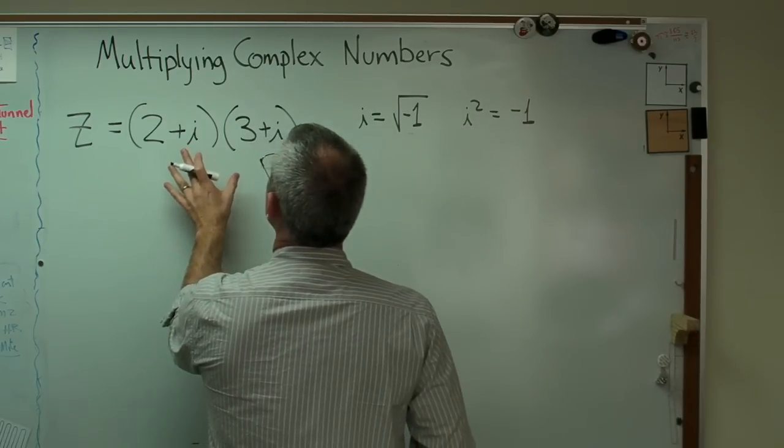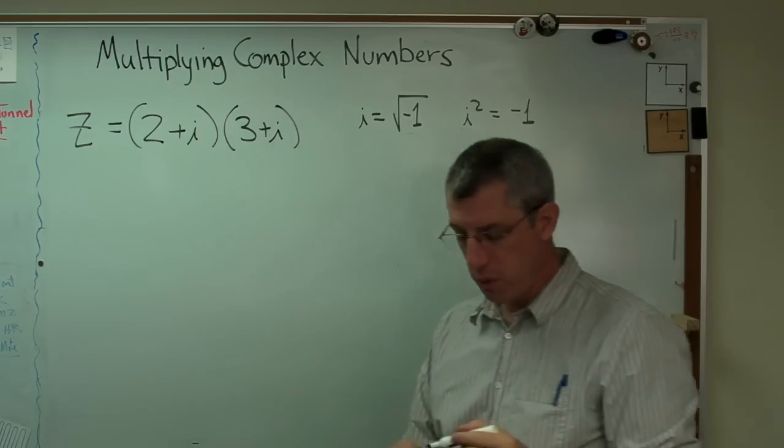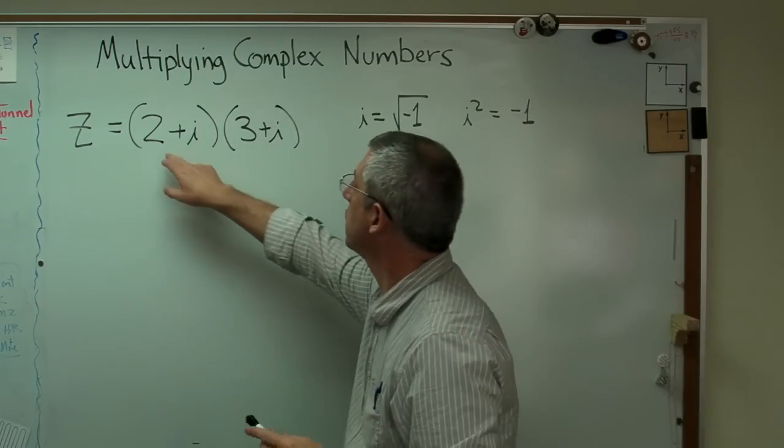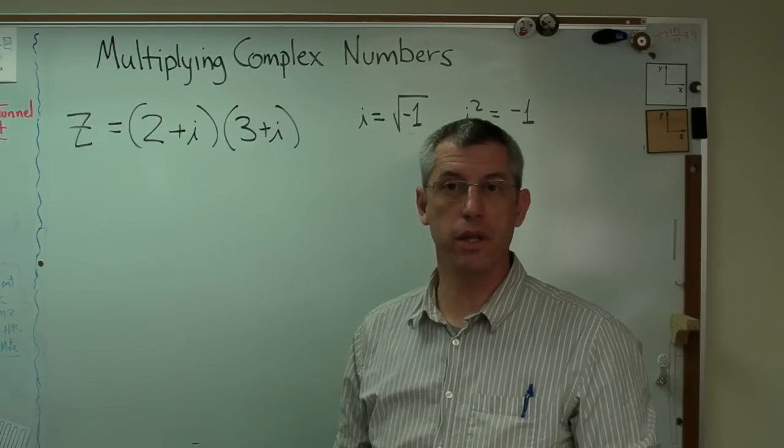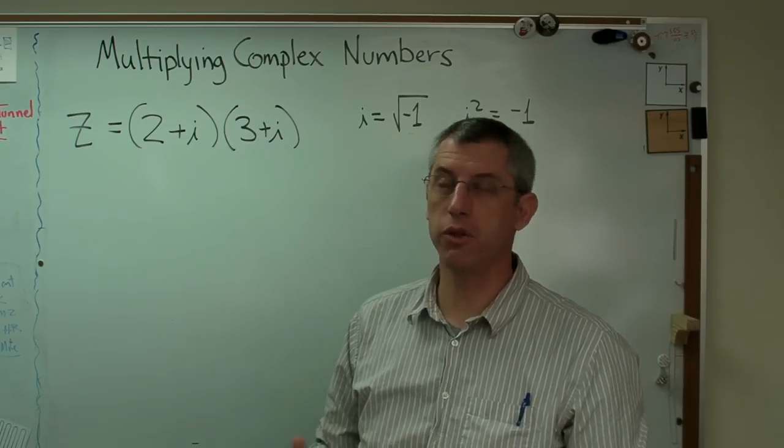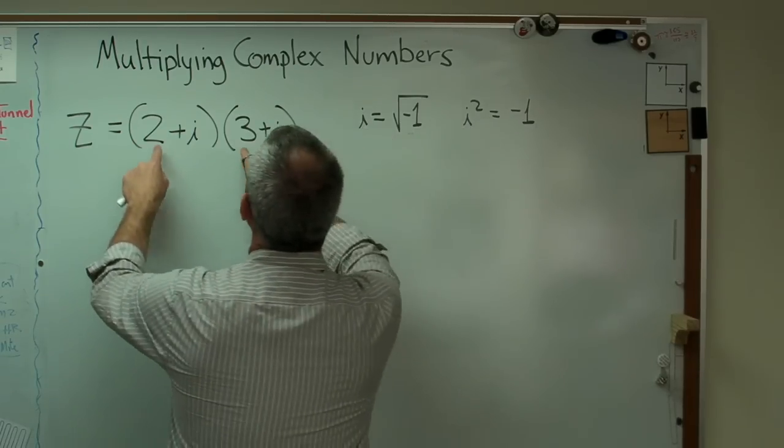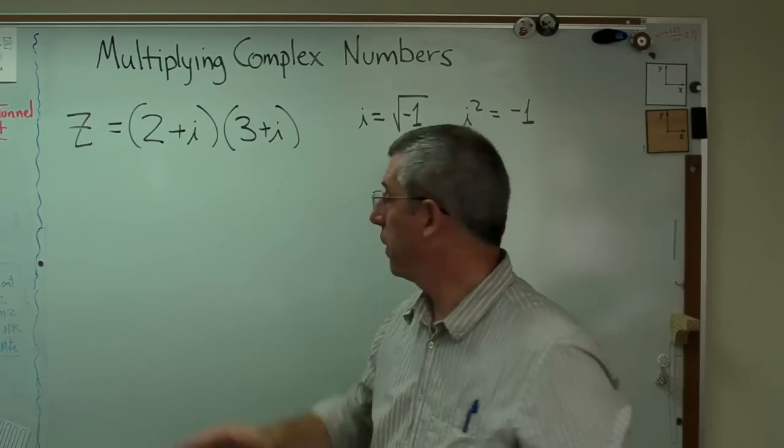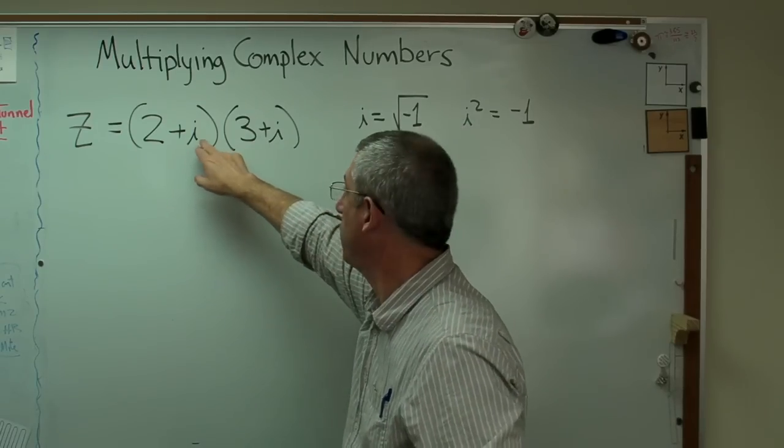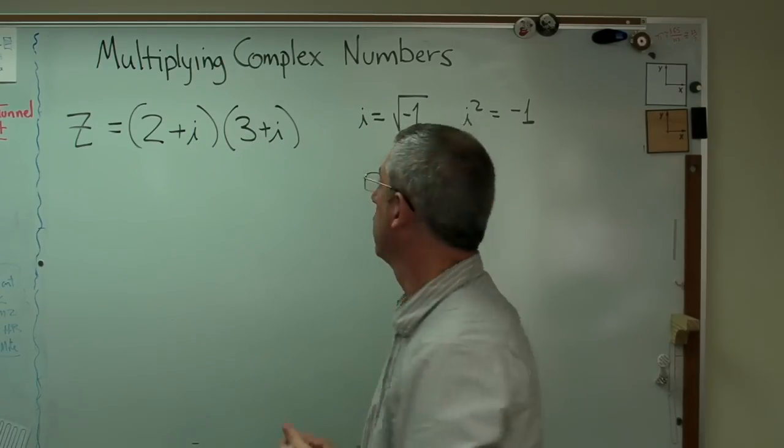So let's look at this now, 2 plus i, 3 plus i. If this were a polynomial, like if this was 2 plus x and 3 plus x, we could multiply it using this simple rule we learned in junior high school. We could go first, outside, inside, last. Well, that works with this too. It doesn't have to be a variable there.